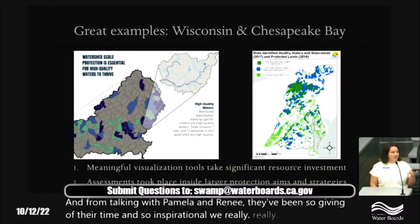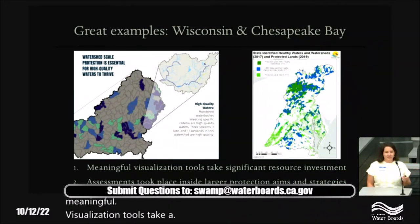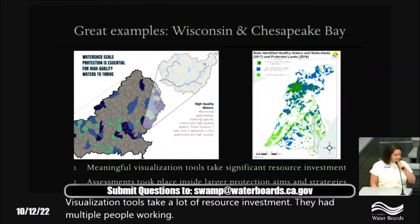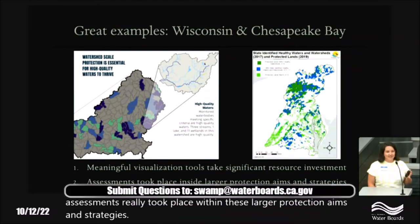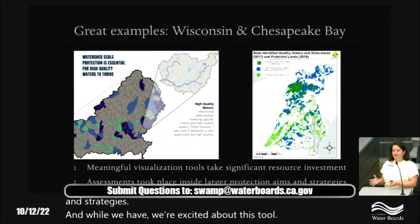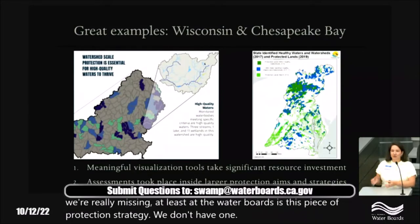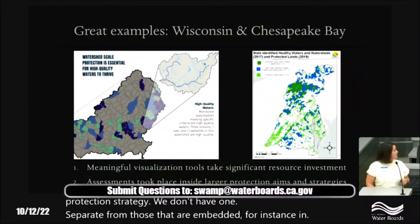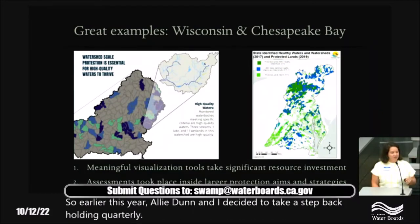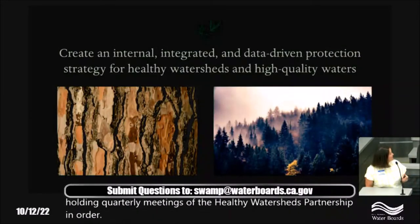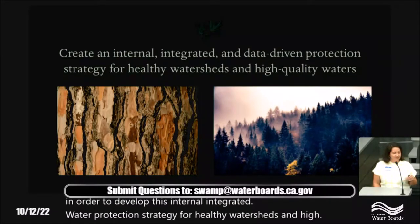Second, these assessments really took place within larger protection aims and strategies. While we're excited about this tool, what we're missing — at least at the water boards — is a protection strategy. We don't have one separate from those embedded in TMDLs. So earlier this year, Allie Dunn and I decided to step back from holding quarterly Healthy Watersheds Partnership meetings in order to develop an internal integrated water protection strategy for healthy watersheds and high quality waters in California.